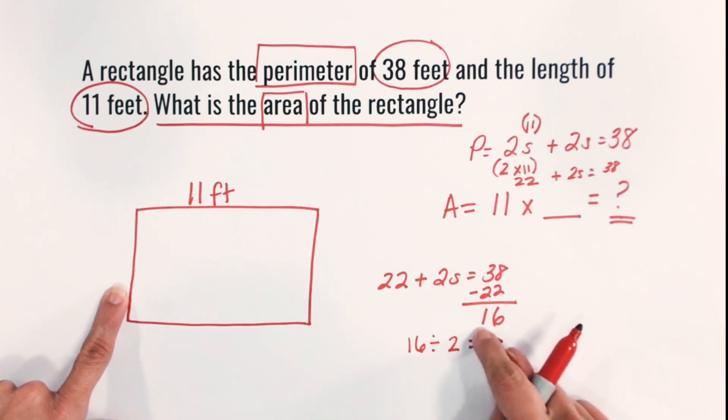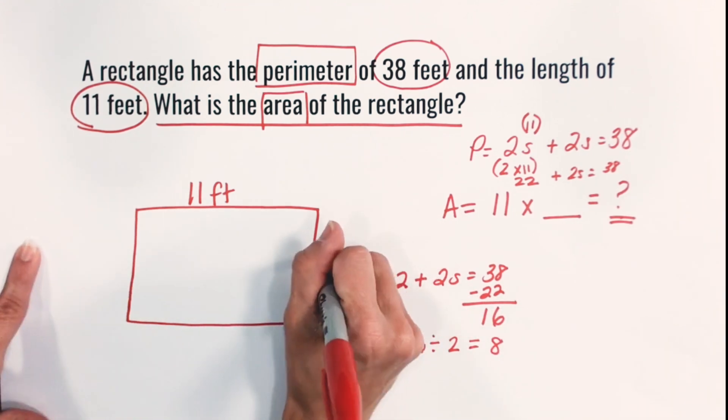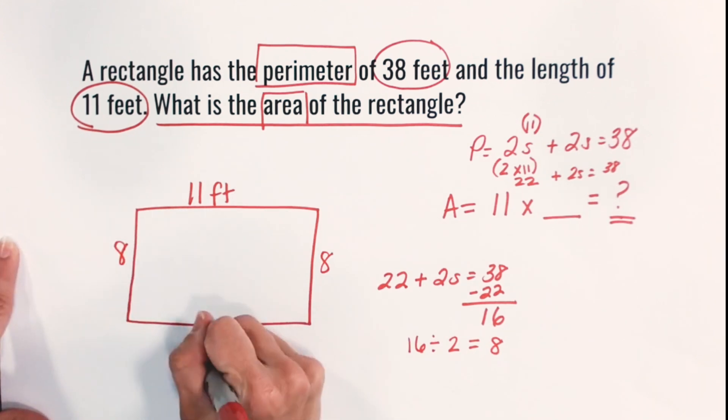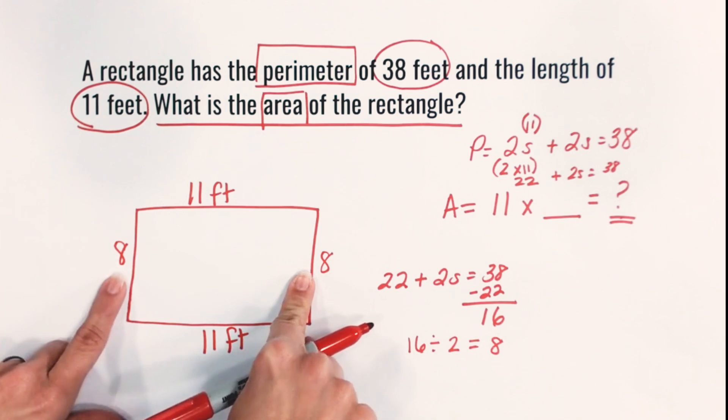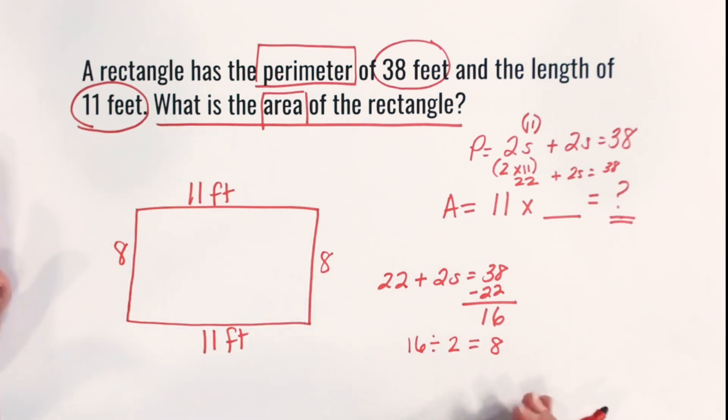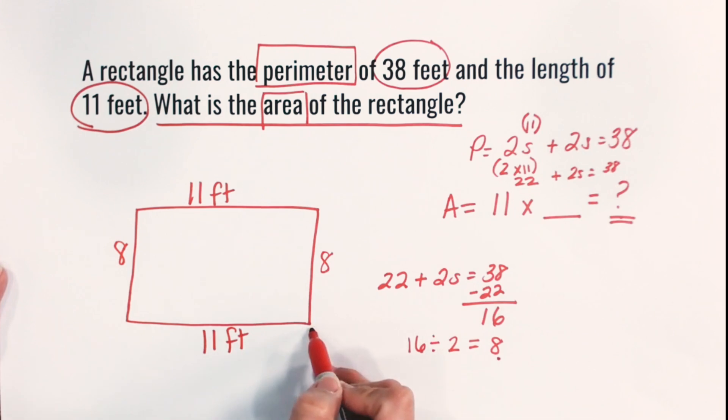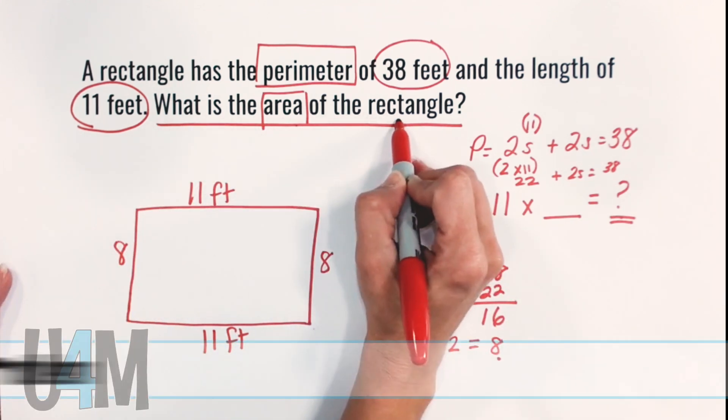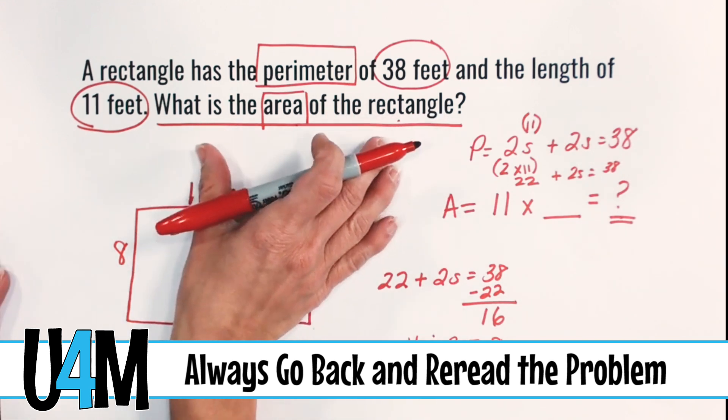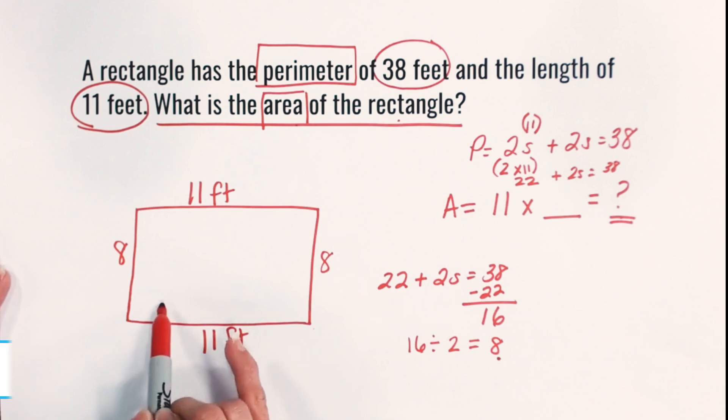So I know that 8 would be this s or these sides. So now I can fill that in for all the sides. So I have 11 feet, 11 feet, 8 feet, and 8 feet. But that wasn't the question. The answer isn't 8. It wasn't what's the length of the missing side. The question is what's the area of the rectangle? Always have students go back and reread what they're actually trying to accomplish. So we have to find the area of the rectangle.